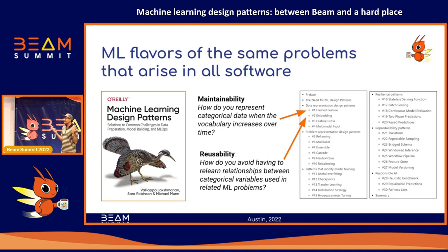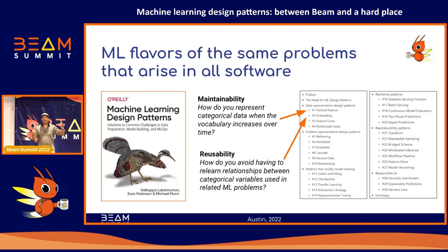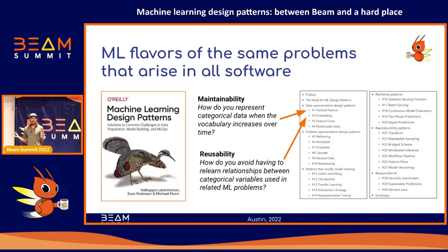What kind of problems are we trying to solve? These are typical problems that occur in pretty much any software. For example, you want your software to be maintainable. In machine learning, lots of times your input feature is a categorical variable. When building airline delay models, we put in the airport code — Austin airport, Dallas DFW airport — as an input. It's a categorical variable, but new airports get built all the time. So how do you maintain a machine learning model when the vocabulary of your categorical variables increases over time?